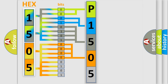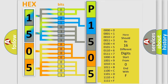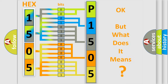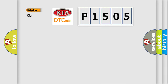A single byte conceals 256 possible combinations. We now know in what way the diagnostic tool translates the received information into a more comprehensible format. The number itself does not make sense to us if we cannot assign information about what it actually expresses. So, what does the diagnostic trouble code P1505 interpret specifically for KIA car manufacturers?